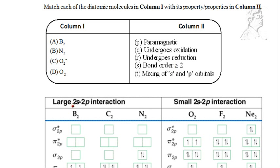For boron and nitrogen, we have large 2S2P interaction. So boron and nitrogen should match with T.